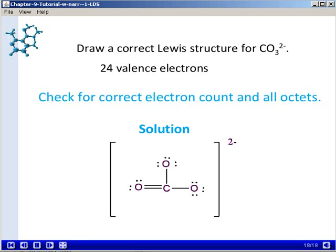So double-check your final Lewis structure for the correct electron count, and you see that we do have 24 electrons and that all four atoms satisfy the octet rule. And in this case, they do.